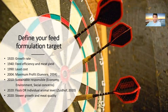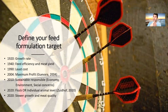In 2010, it was mentioned that we need to formulate diets based on sustainable production. It means we need to pay attention to environment, economy, social concerns, and animal welfare. So it's a higher level than the previous targets.